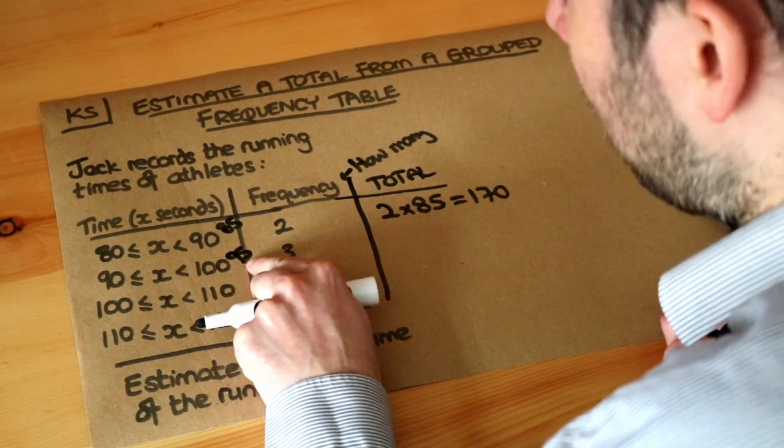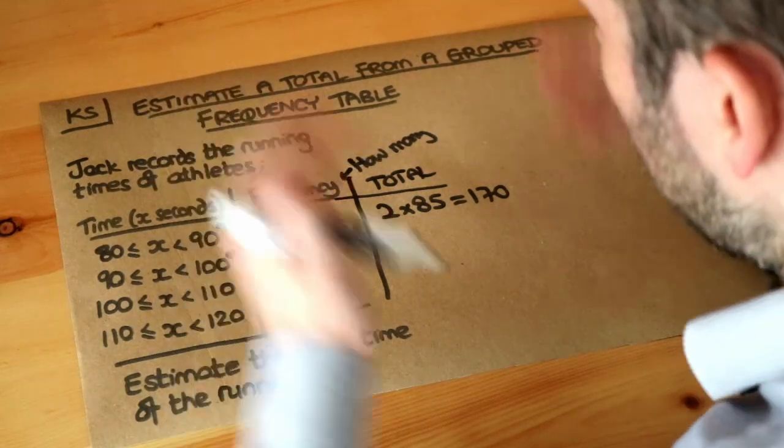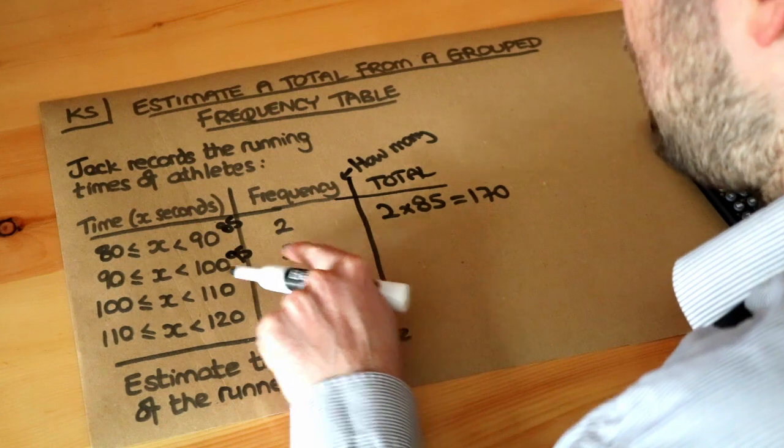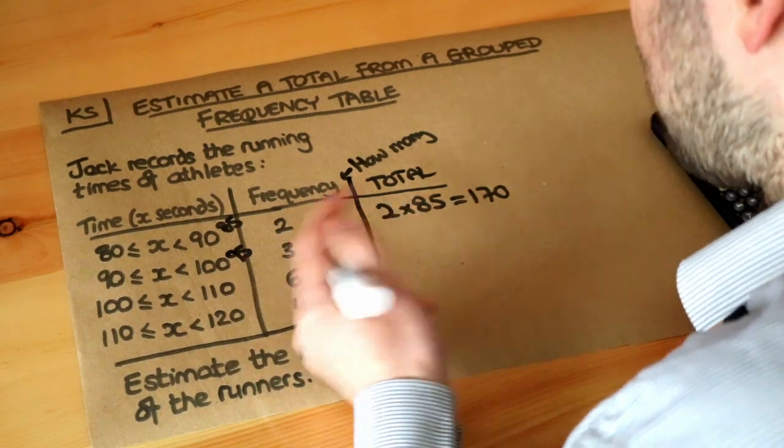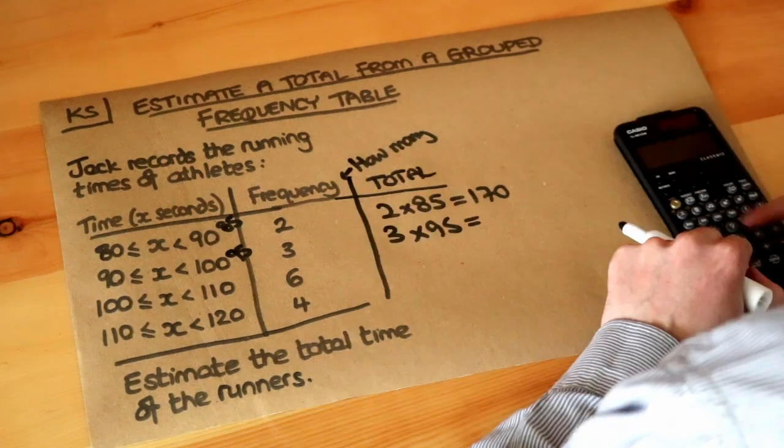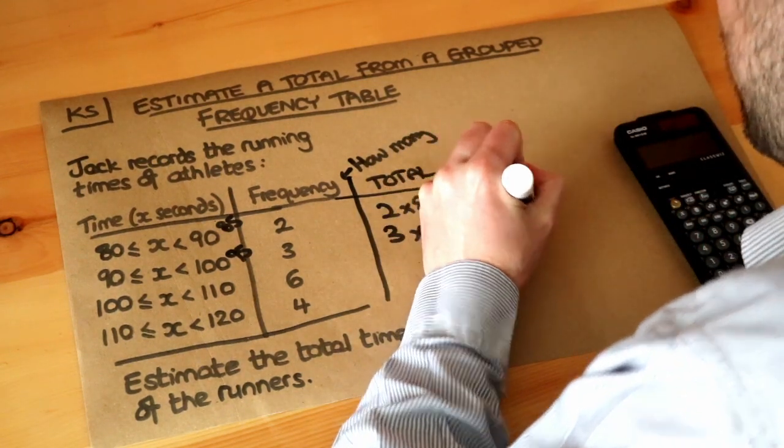Again, it might be somewhere below that, somewhere above that, but we hope that they average out at 95 seconds each. So three athletes, each with a time of 95 seconds, their total time will just be 3 times 95, which is 285 seconds.